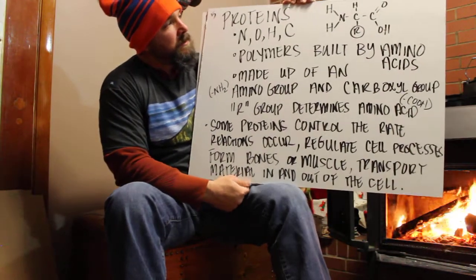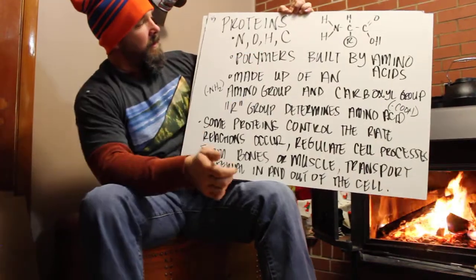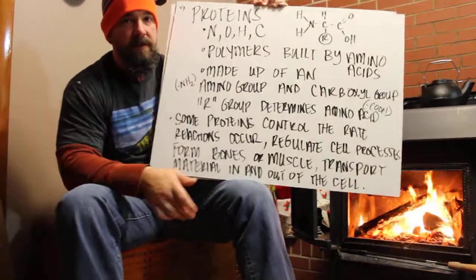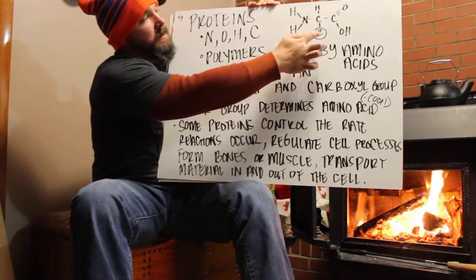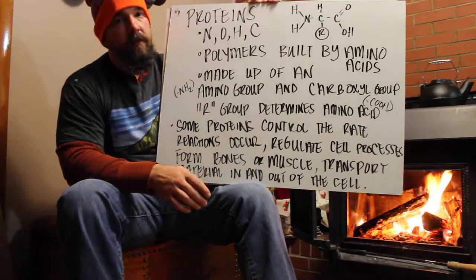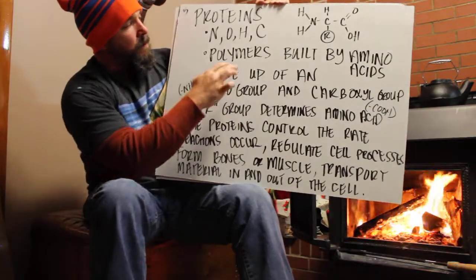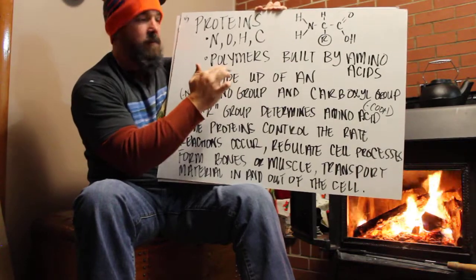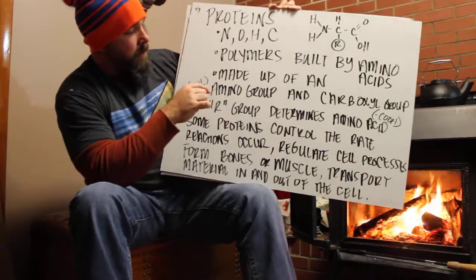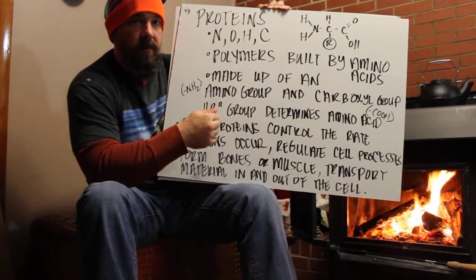The fourth macromolecule is proteins. Proteins are made up of a carboxyl group and an amino group. These two groups on the outside are always the same. It's the R group that determines the different amino acid, and if it's a different amino acid, it's going to be a different protein. So these can connect because they're the same on the outside. They are polymers — poly meaning many — made up of many different amino acids. They're built from the amino group, the carboxyl group, and the R group, and the R group is the one that determines what the amino acid is.